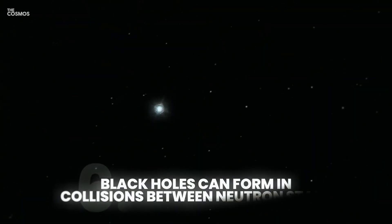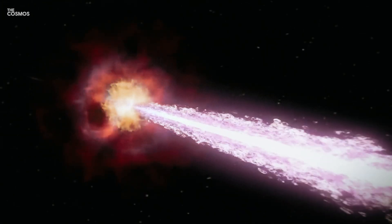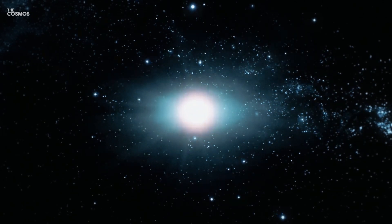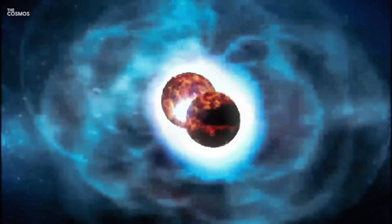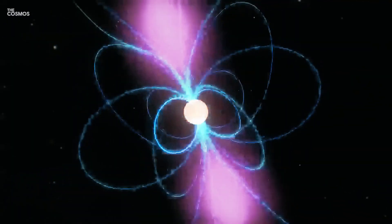Black holes can form in collisions between neutron stars. When two neutron stars, extremely dense remnants of supernova explosions, collide, they can merge to form a black hole. This violent event releases a tremendous amount of energy, including gravitational waves and gamma ray bursts.